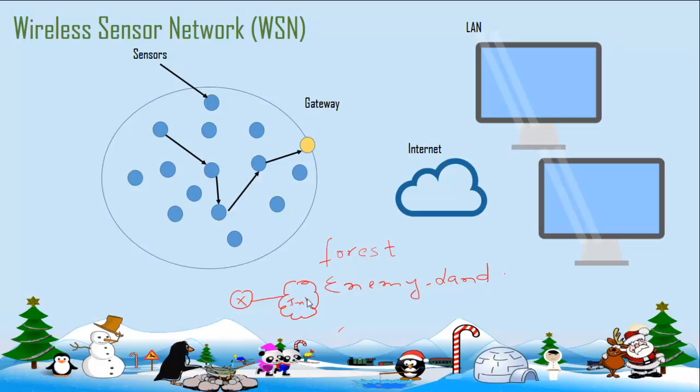So this is our internet and some data arrives to this router. Now this router is connected to some network, let it be like this, we call them subnet.